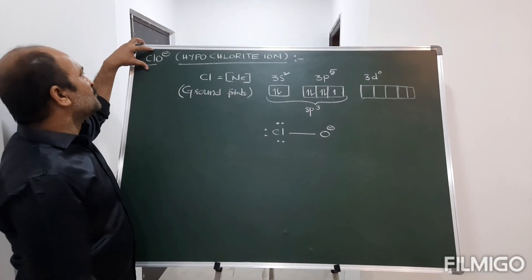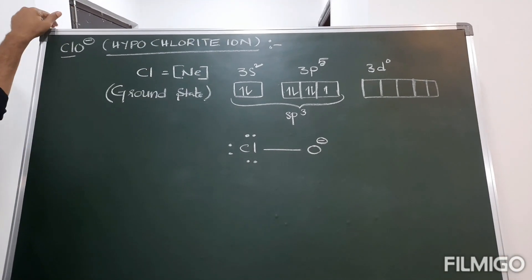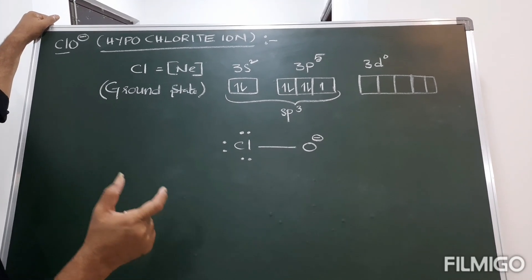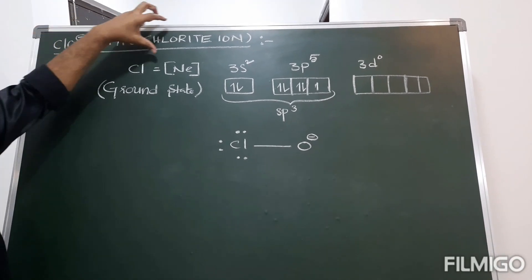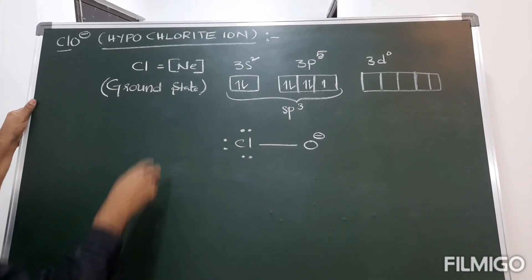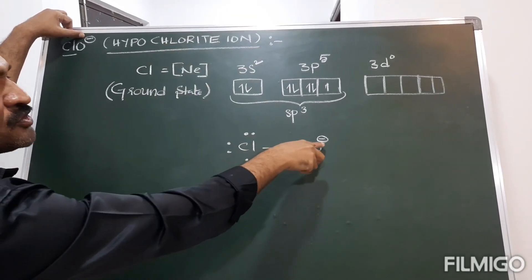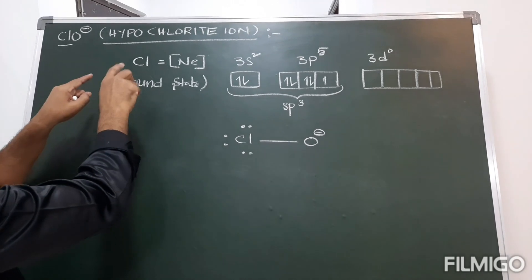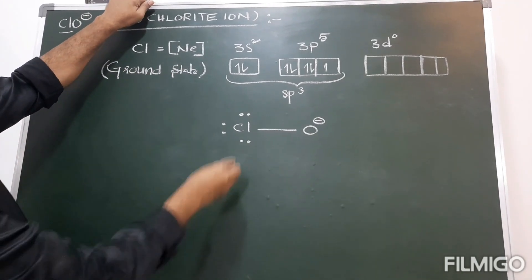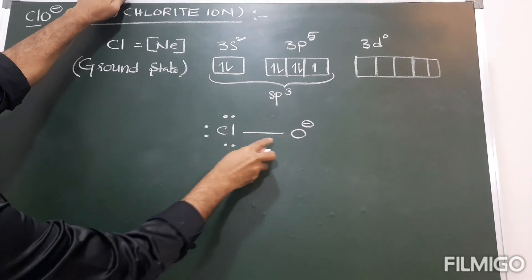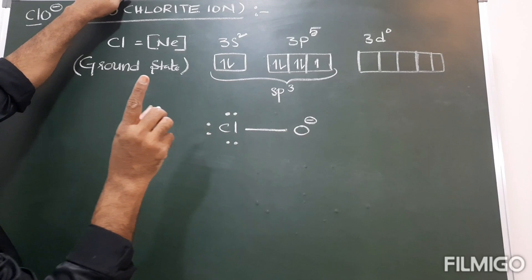Now I am taking the first molecule, ClO⁻. The heading is hypochlorous acid, but we take the hypochlorite ion because all oxy acids of chlorine exist as their anions. The central atom is chlorine. In the ground state, chlorine already has one unpaired electron, which is sufficient to form a single bond with oxygen. So chlorine does not undergo any excited state; the hybridization is sp3, and there is only a single bond between oxygen and chlorine — no pi bond formation.